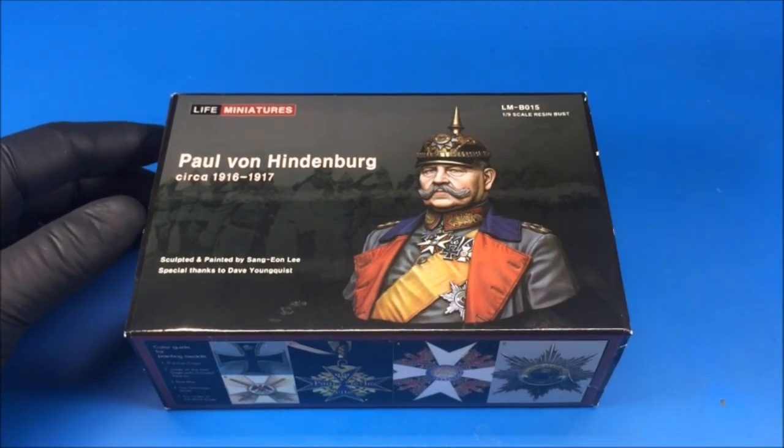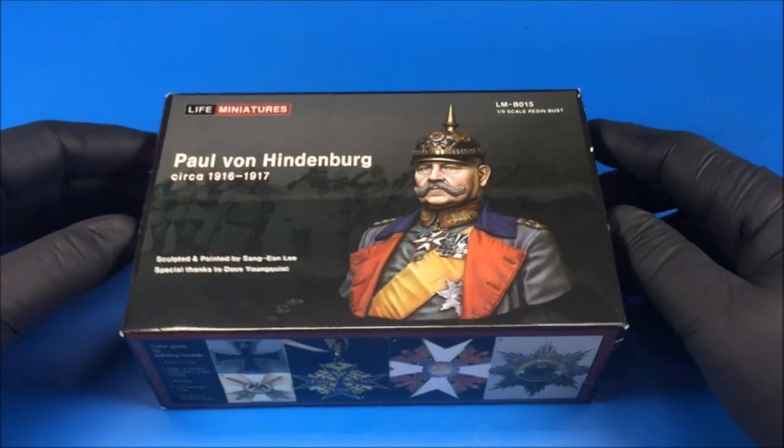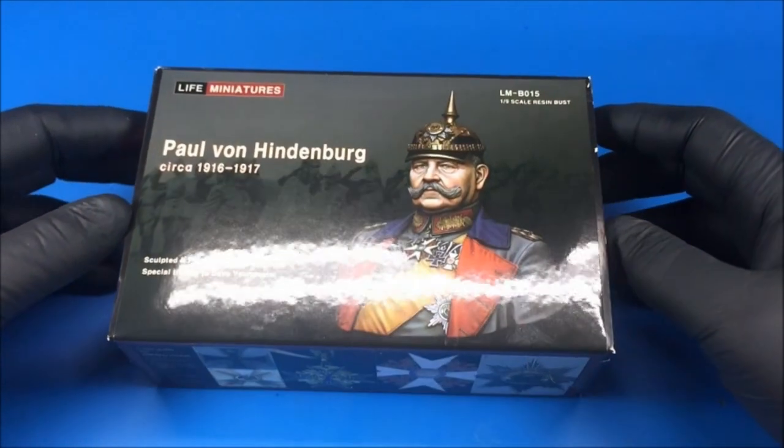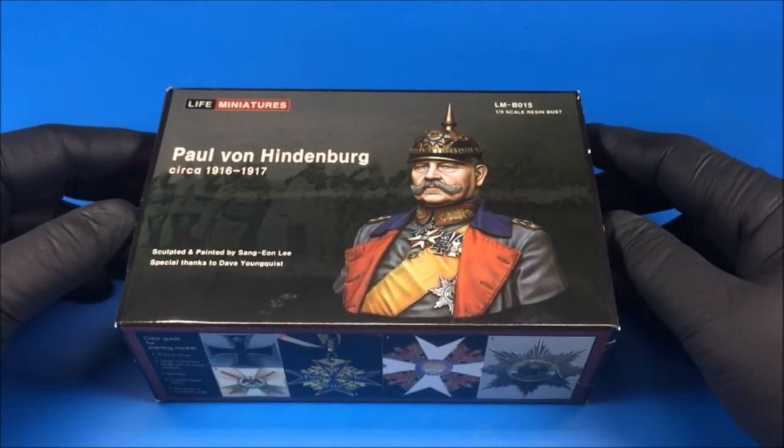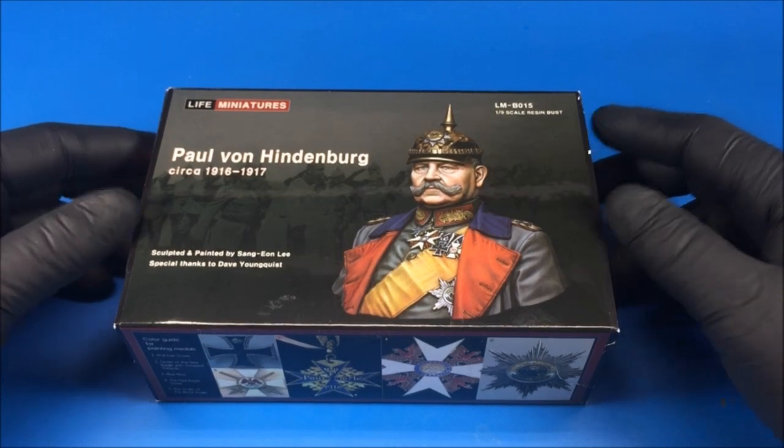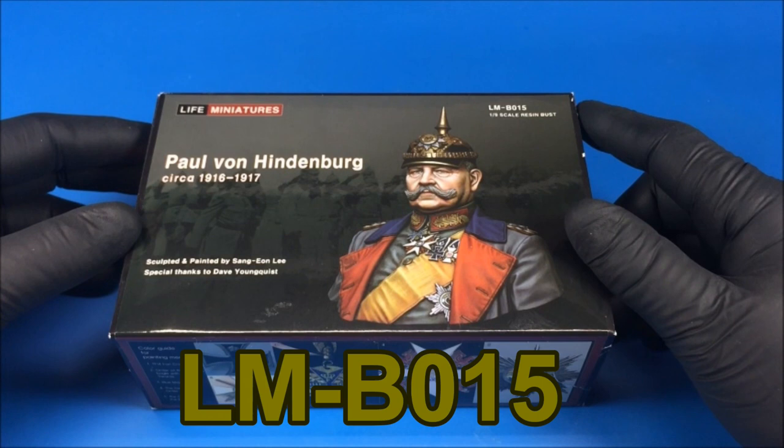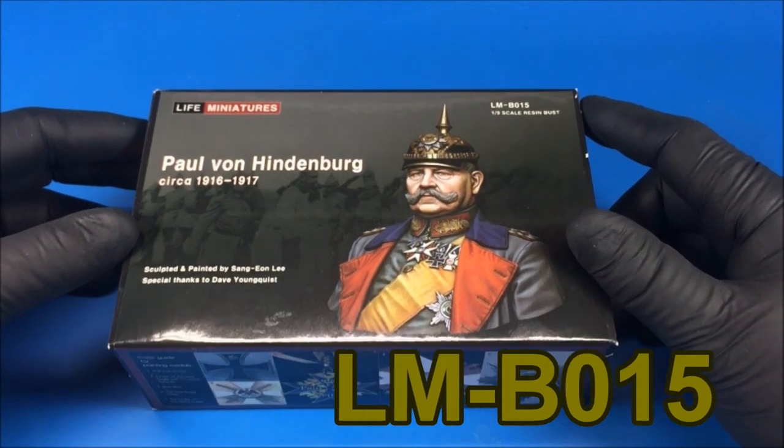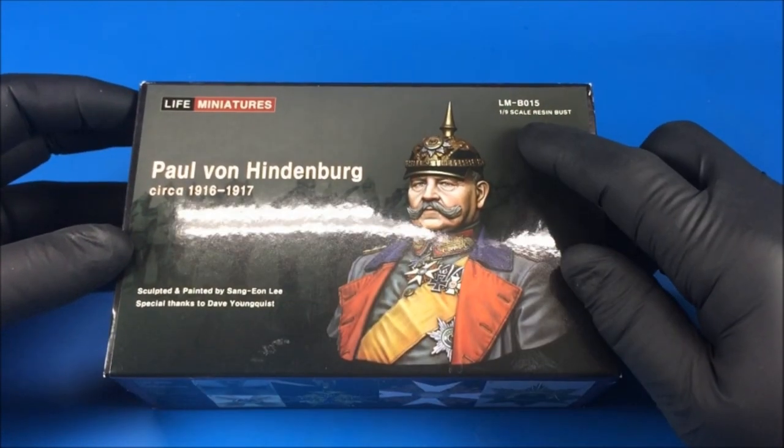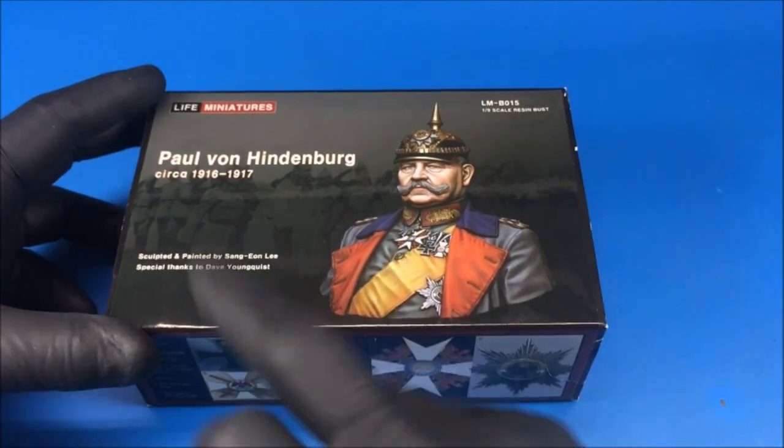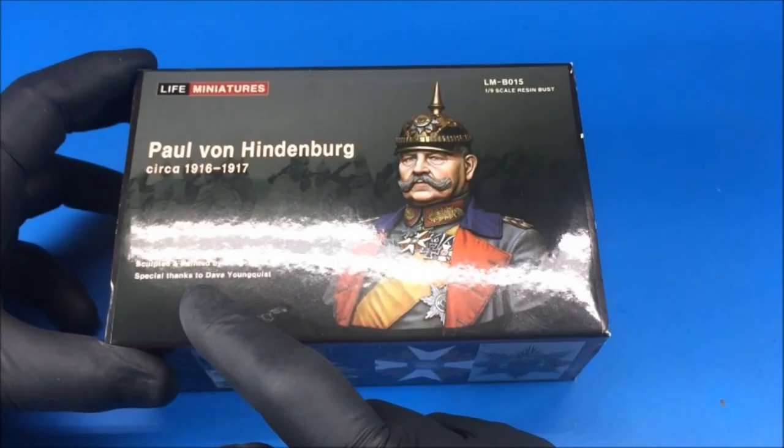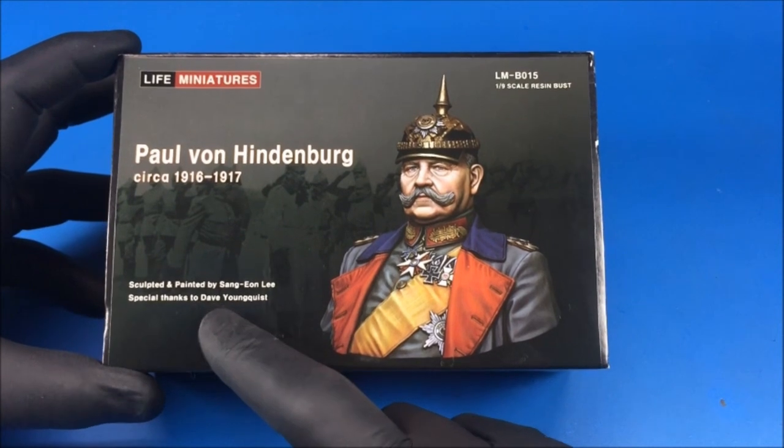Hello everybody and welcome to another Small Soldier video. In today's video, I'll be doing a review of this Life Miniature's Paul von Hindenburg circa 1916-1917. And the number of the kit is LMB015. And it's actually a 1 ninth scale kit. Not 1 tenth. Interesting. And again, it's sculpted and painted by the great Sang Yong Lee.